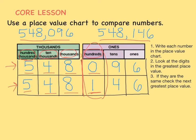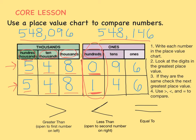One is bigger than zero, so that means the second number is bigger than the first number. Our last step is to use greater than, less than, and equal to symbols to compare the two numbers. Greater than is the symbol that's opened up to the left. Less than is the symbol that's opened up to the right. And equal to just looks like two lines on top of each other. Which symbol will we need to use for this example? Well, we said the second number was greater than the first number, so we'll use the less than sign.